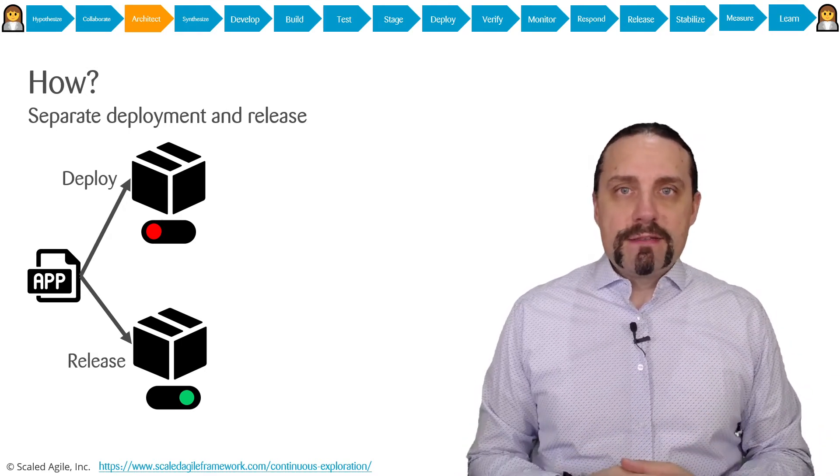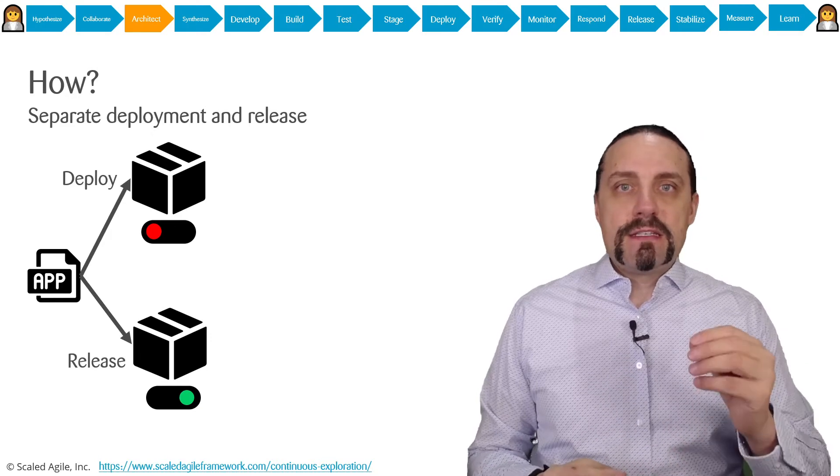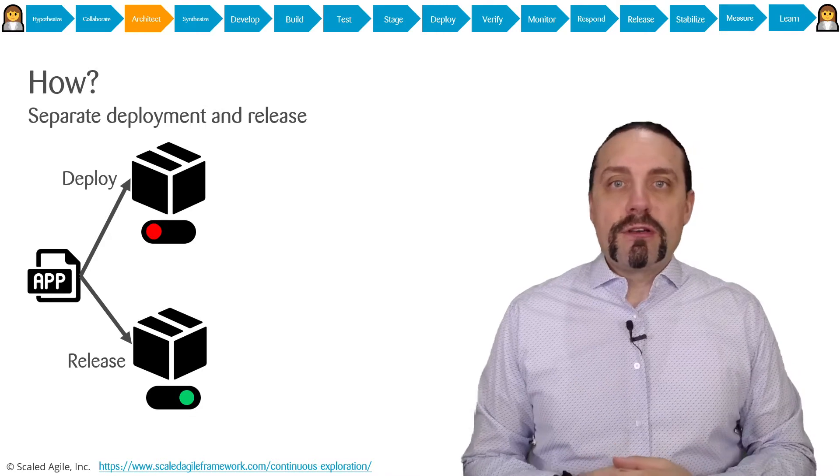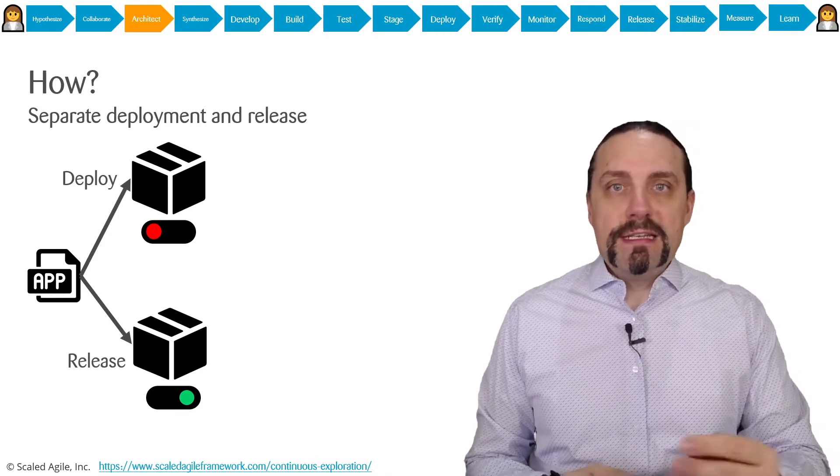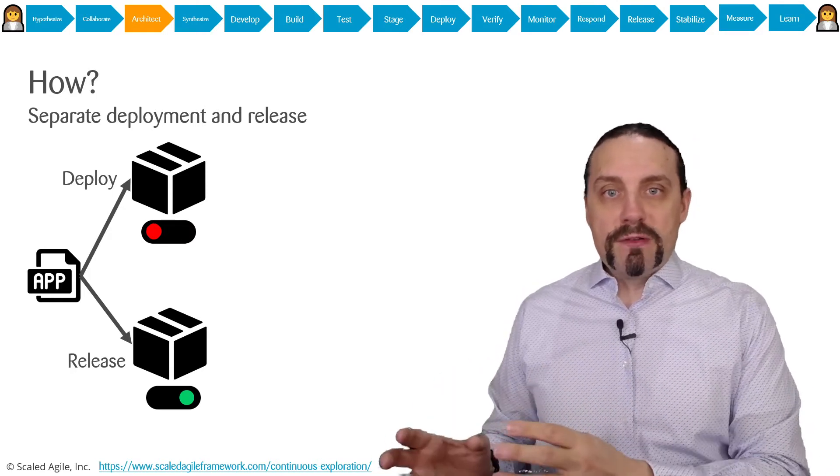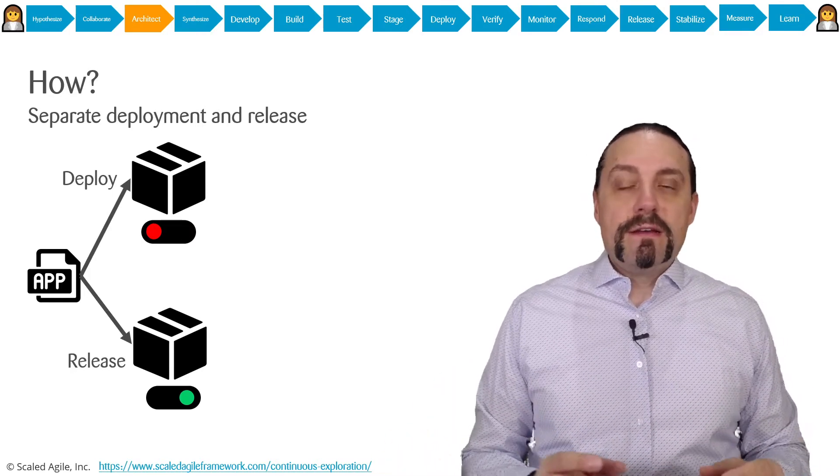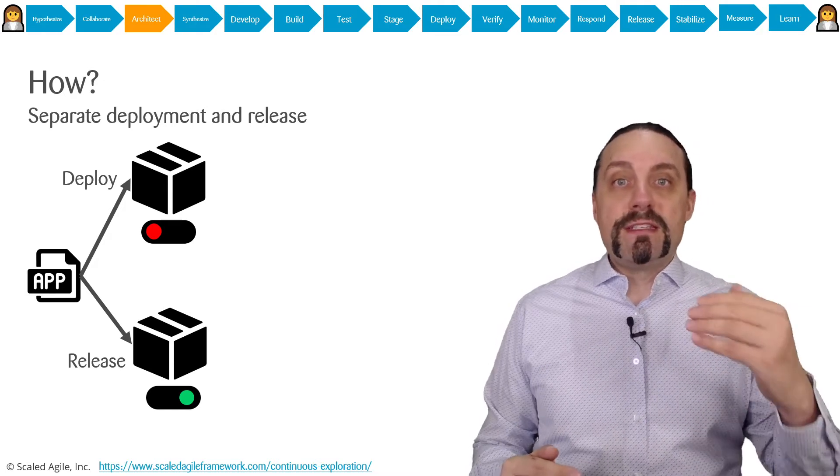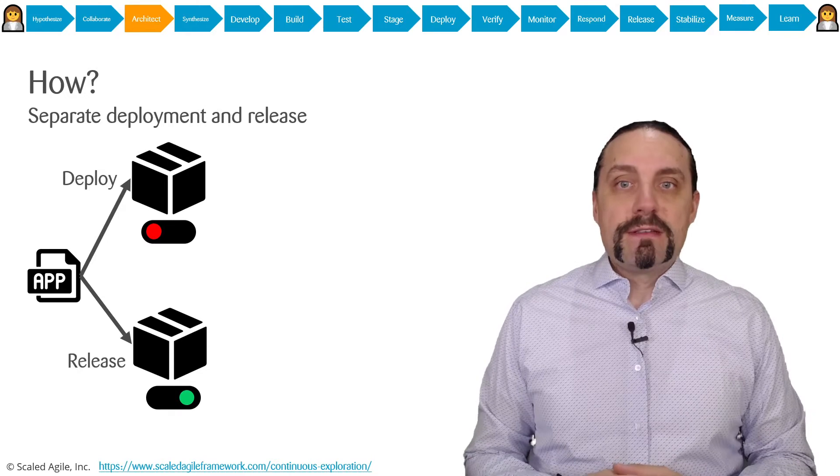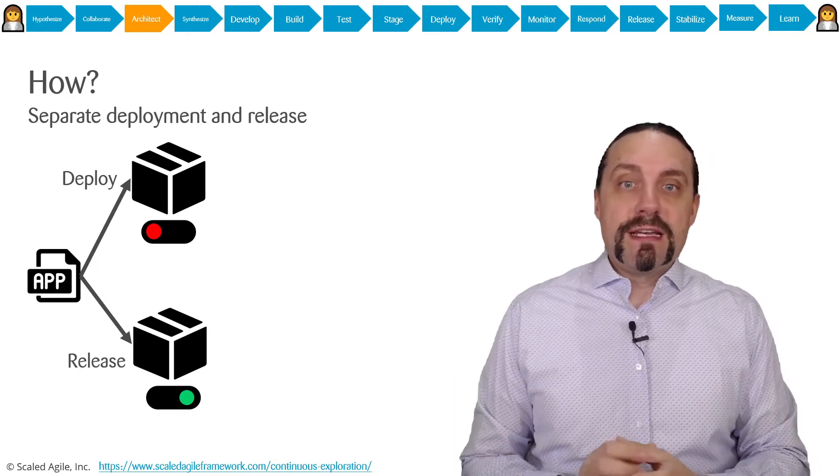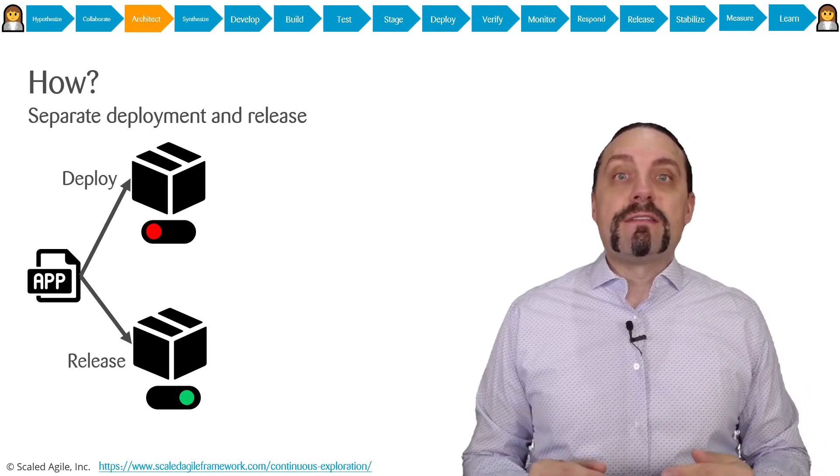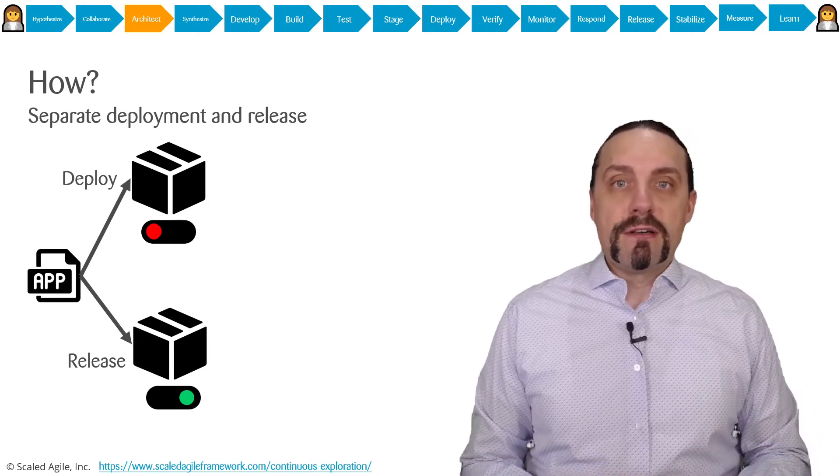The act of releasing is switching a feature toggle on in production. By separating deployment and release, we are able to continuously deploy code into production. That's why we need this separation because it enables us to continuously deliver value to our customer.